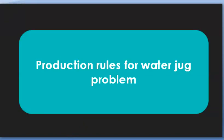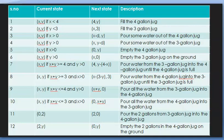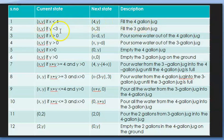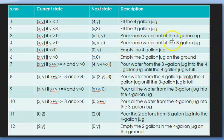Now coming to the production rules, which is a very important part of any AI problem. We have a set of 12 rules and we have to convert these rules into Prolog code in order to develop a solution. The rules state: if the 4 gallon jug has less than 4 liters, fill the 4 gallon jug; if the 3 gallon jug has less than 3 liters, fill the 3 liter jug; if the 4 liter jug has more than 0 liters, pour some water out; and if the 3 liter jug is not empty, pour some water out of the 3 liter jug.